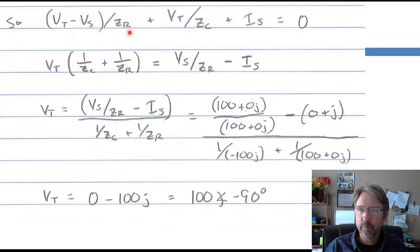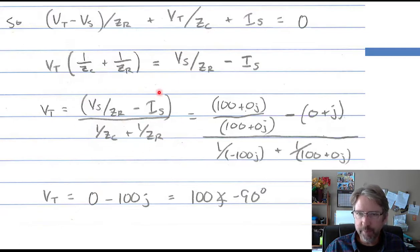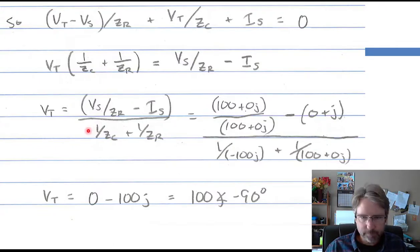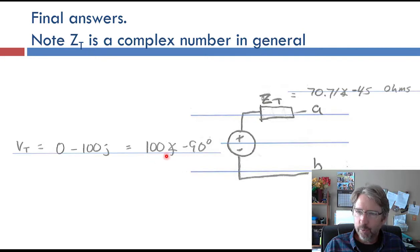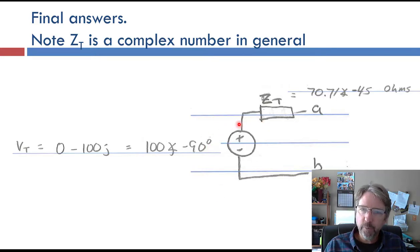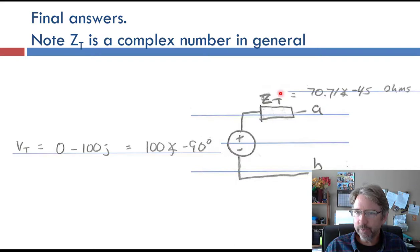Combining Ohm's law and Kirchhoff's current law gives one equation. Factor out the VT terms and divide — if you leave everything in terms of impedances and sources it looks exactly like a resistor circuit. Eventually you should get VT = 100 with a phase of minus 90 degrees. We can put it in polar form or leave it in rectangular form — these are equivalent phasors. This is the phasor of the Thevenin equivalent; in polar form it's easy to convert back to a cosine in the time domain.